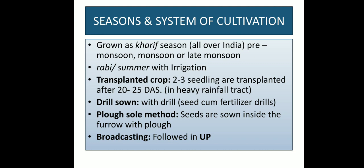Season and System of Cultivation: Mainly, ragi crop is grown as a kharif crop, rabi or summer crop under irrigated conditions. In kharif season, pre-monsoon, monsoon or late season are mainly preferred. In rabi season or summer season, it can be easily grown with light irrigation. It is also transplanted with 2 to 3 seedlings transplanted after 20 to 25 days after sowing. Drilling of ragi crop is also done with the help of a seed drill or seed-cum-fertilizer drill. Mainly, broadcasting method of sowing is followed in India, in UP.